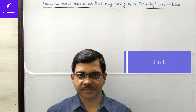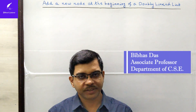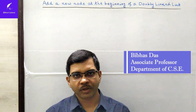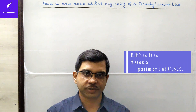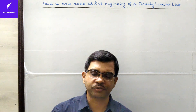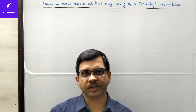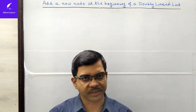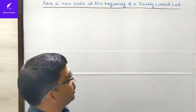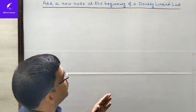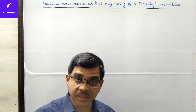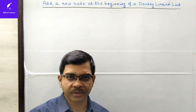Hello, dear students and learners. In this series on data structures and algorithms, today I am going to start the doubly linked list. I have already completed almost all the functions of the singly linked list. Now today I am going to write a function that will add a new node at the beginning of a doubly linked list.